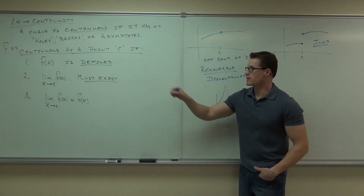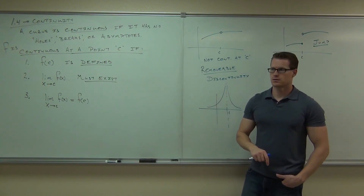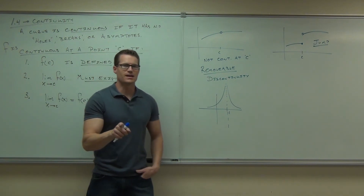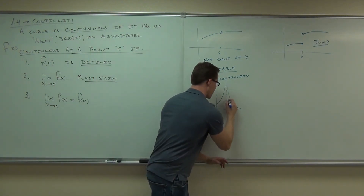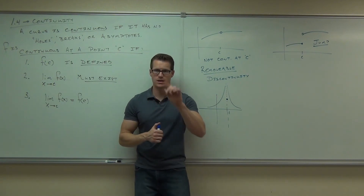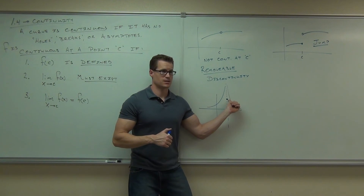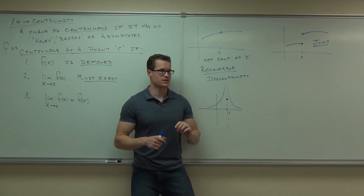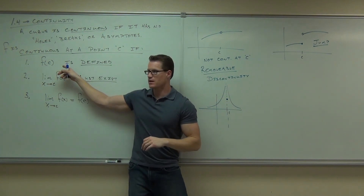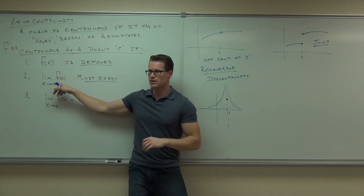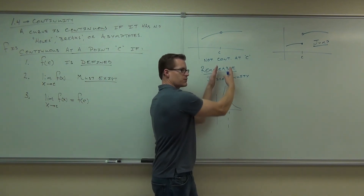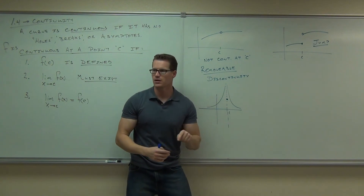Let's check our three statements for the next example. Number one: is the function defined at point C? What if I placed a specific point there — then yes, the function is defined at C. Number two: does the limit exist? Are you going to the same spot from left to right? Going to infinity — yes, the limit exists. So number one is satisfied and number two is satisfied. This is why we need number three: does the limit equal the value of the function? The limit equals infinity; the value of the function equals that specific point. Are those the same thing? No — so number three fails.